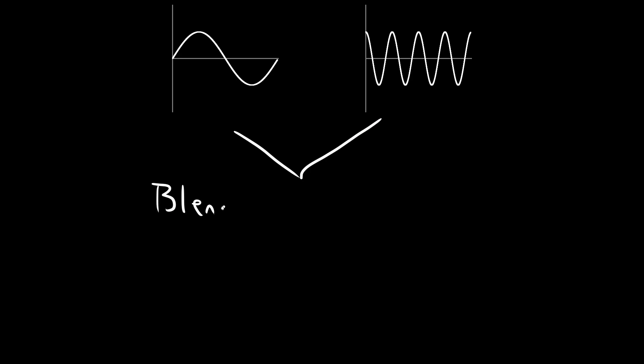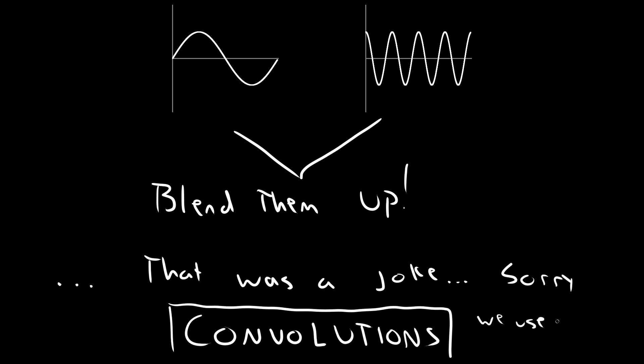But let's say we want to blend two functions together. Well that gets a little convoluted. And by that I mean we need to use convolutions to do that.